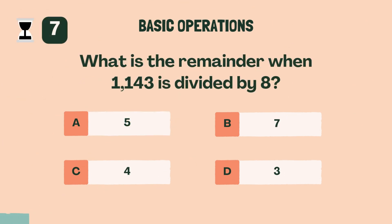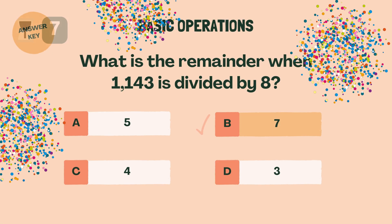What is the remainder when 1,143 is divided by 8? B, 7.